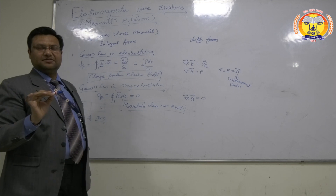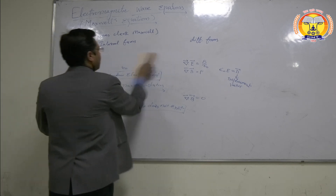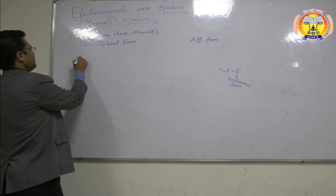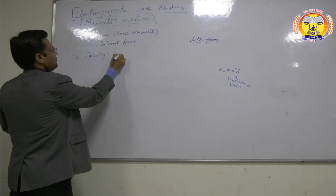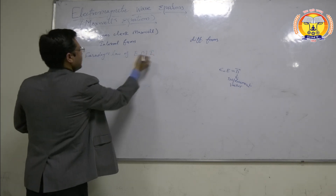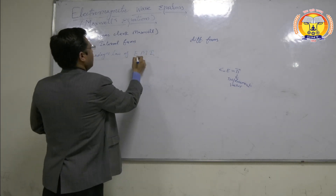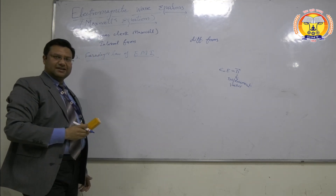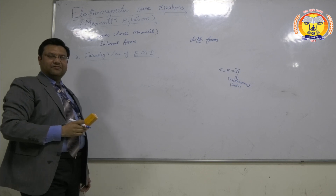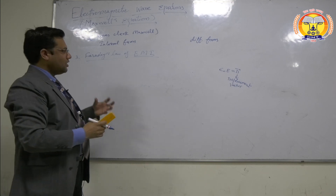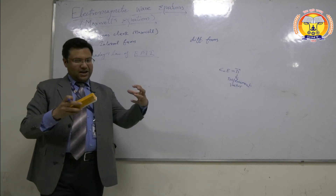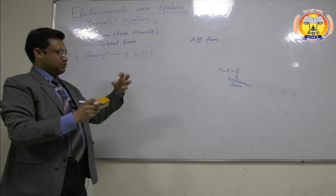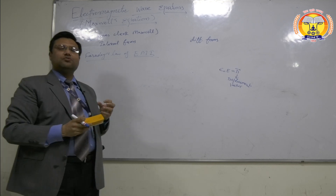The third equation is the well-known Faraday's law of electromagnetic induction. Electromagnetic induction states that when there is relative motion between a coil and a magnet, an induced EMF is produced in the coil. If the coil is closed, an induced current is also produced in the coil.